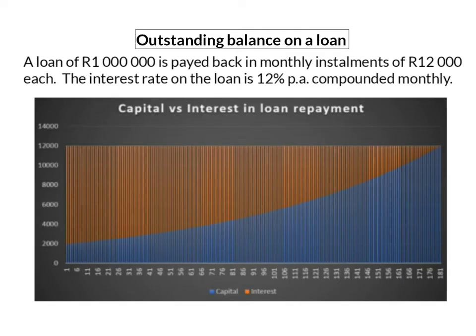Let's have a look at an example. A loan of 1 million Rand is paid back in monthly installments of 12,000 Rand each. The interest rate on the loan is 12% per annum, compounded monthly. The graph below shows a very important concept. The monthly installment of 12,000 Rand is broken up into two parts: the orange part shows how much of that 12,000 Rand is interest on the loan, and the blue part shows how much of that monthly installment is capital that is paid off on the loan.